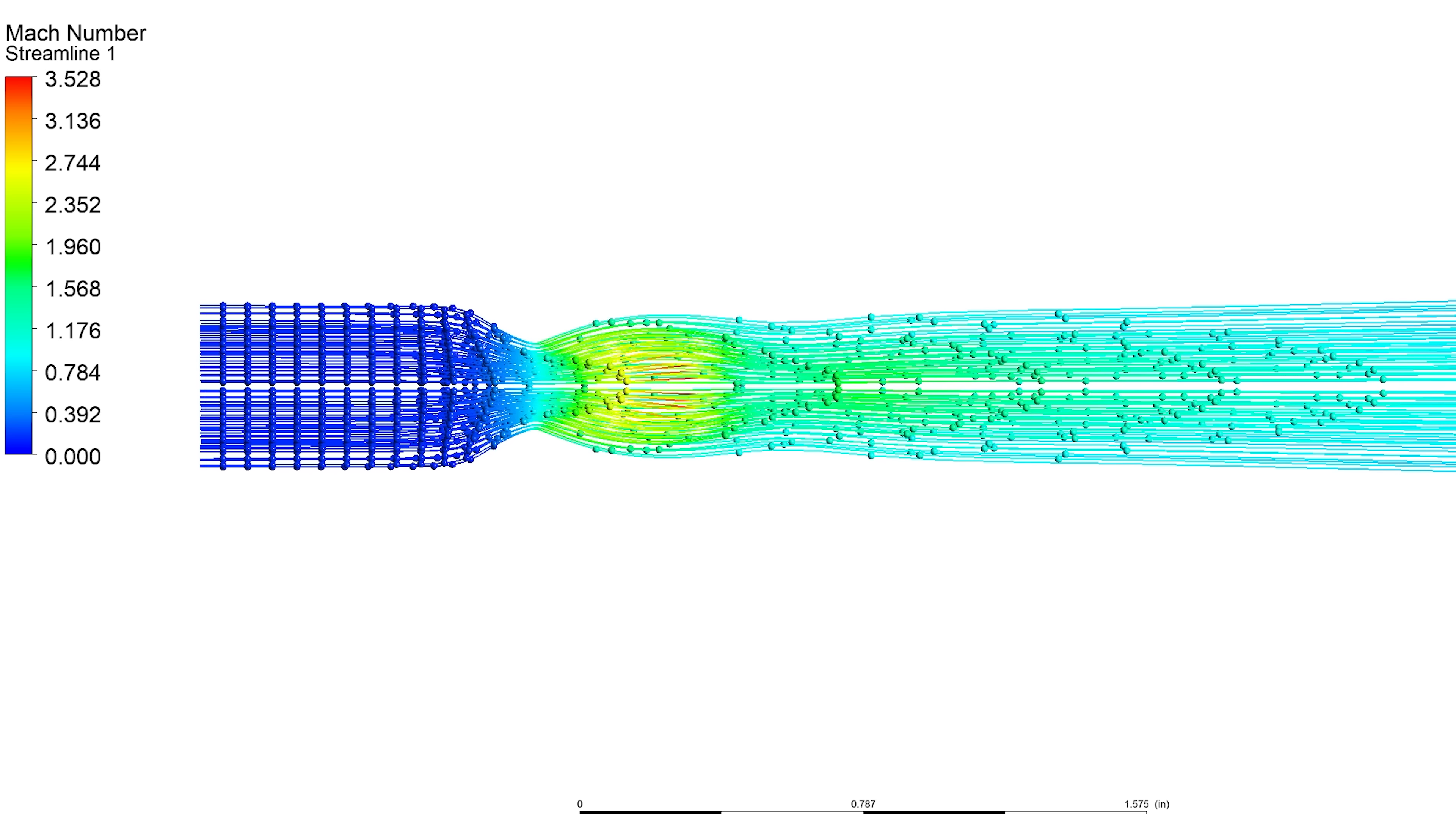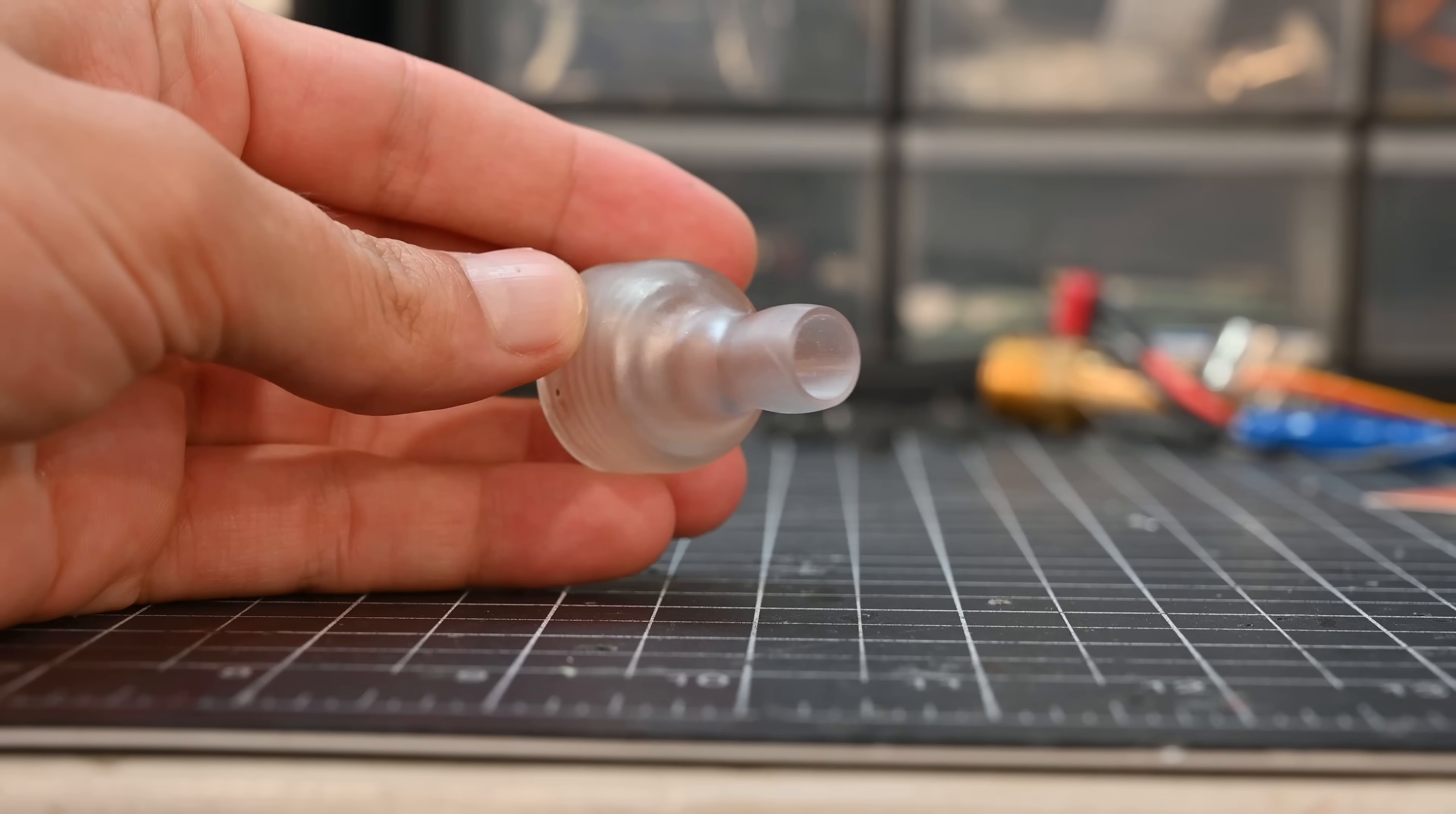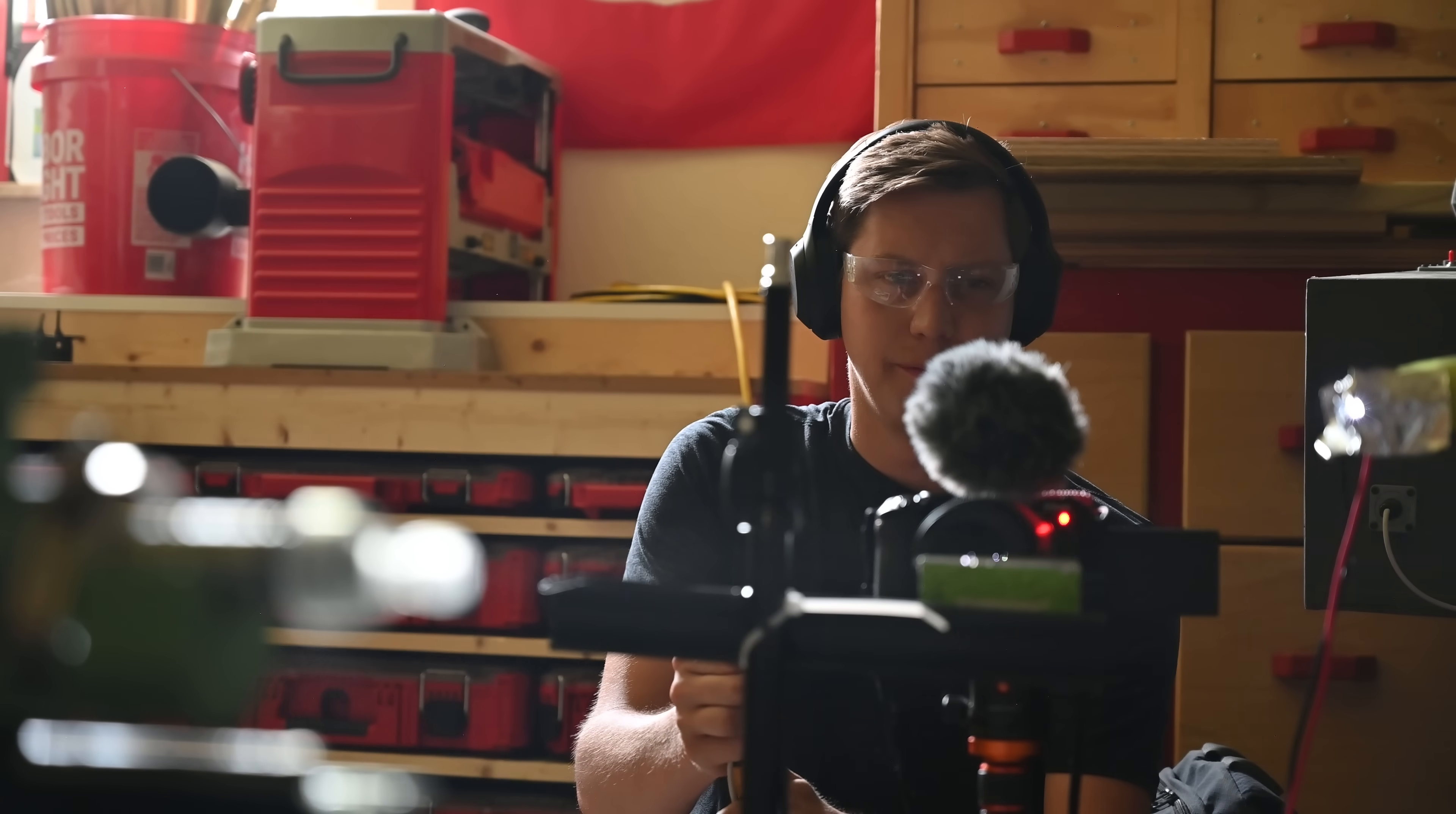So with the CFD out of the way, I wanted to get some video of a very over-expanded nozzle, which would create really good shock diamonds. So I printed this. This nozzle has about double the area ratio that it should, which means the exhaust will be well below atmospheric pressure. This should look pretty cool. Over-expanded nozzle. 3, 2, 1. Yeah, I think it's safe to say this looks pretty cool.